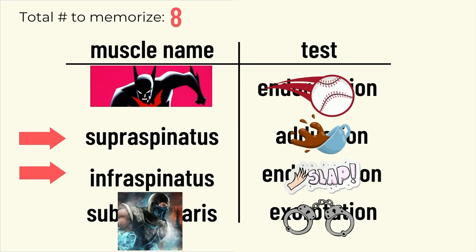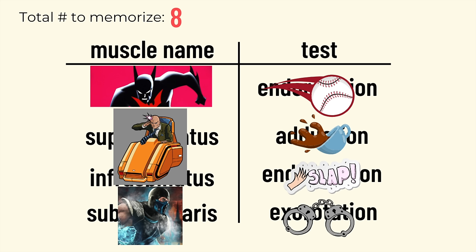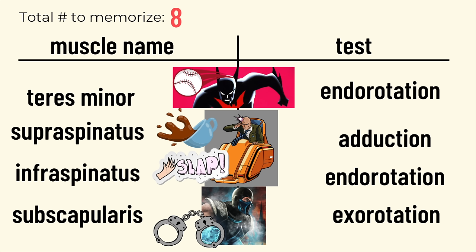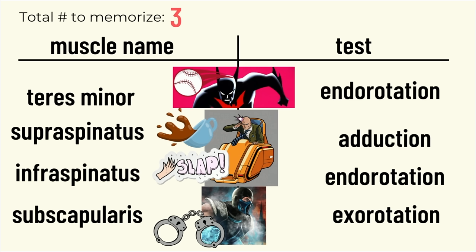I can chunk two muscles together because supraspinatus and infraspinatus share the same root word, 'spinatus,' meaning spine. I wanted an image referencing the spine, so I chose Professor X, because his origin story is that he got shot in the spine. Then I can chunk even further by combining the images of the muscles with the images of the tests — so the image of Terry throwing a baseball now represents multiple pieces of information: the teres minor muscle, the baseball-throwing test motion, and the opposite motion showing how teres minor moves the arm.